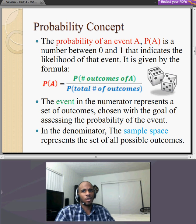which I've color-coordinated for you. The event in the numerator represents a set of outcomes chosen with the goal of assessing the probability of the event. In the denominator, the sample space represents the set of all possible outcomes.